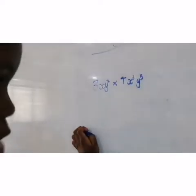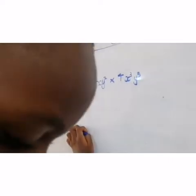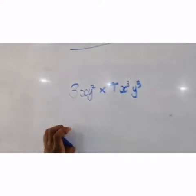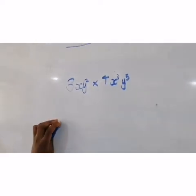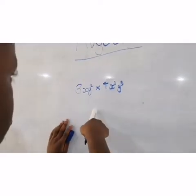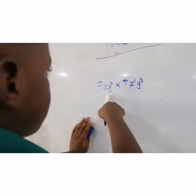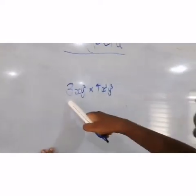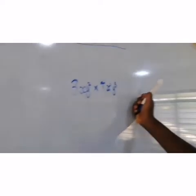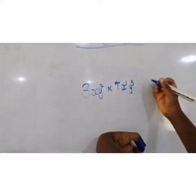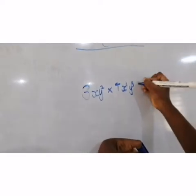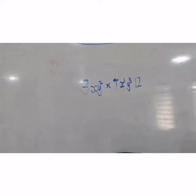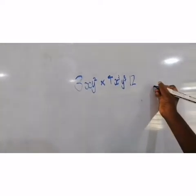So now the next question involves multiplying. When you are multiplying, that would be 3 times 4, which will be equal to 12. Just multiply the numbers first.